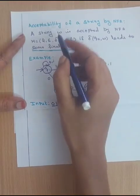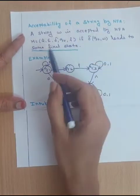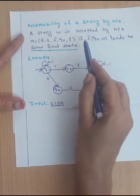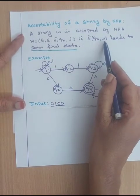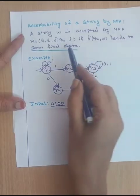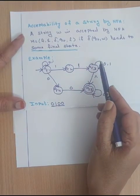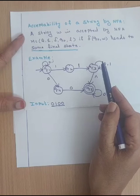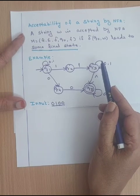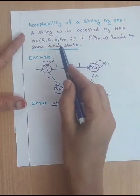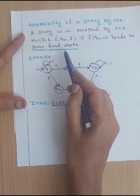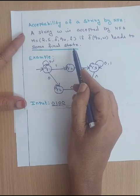Now let us discuss the same concept using NFA. A string W is said to be accepted by NFA if and only if delta of Q0, W leads to some final state. Because the definition of NFA is that for one particular input and one particular state we can have any number of next states. So if we are able to reach some final state from the initial state, then that string is said to be acceptable.